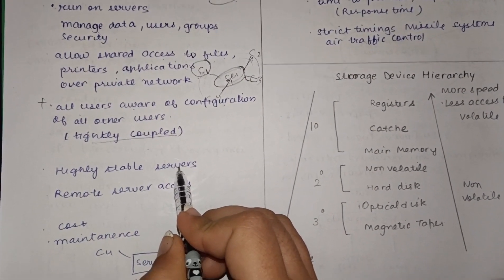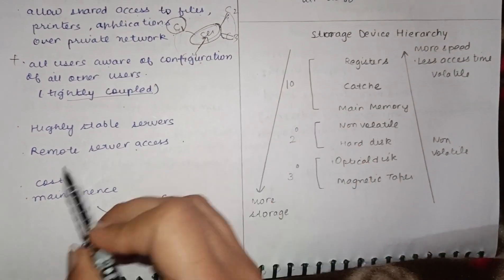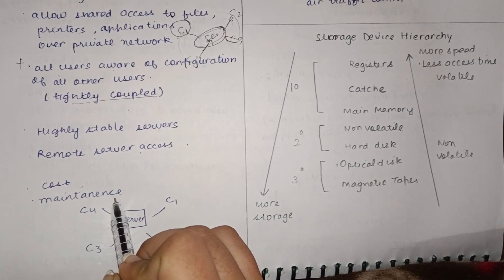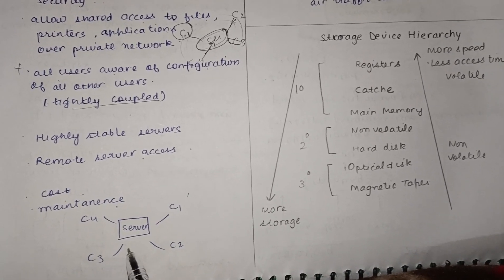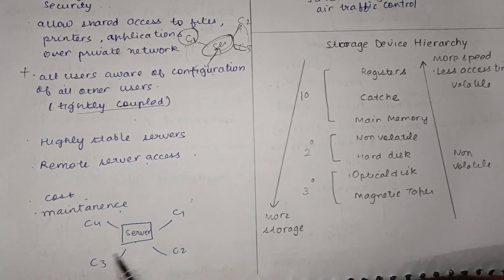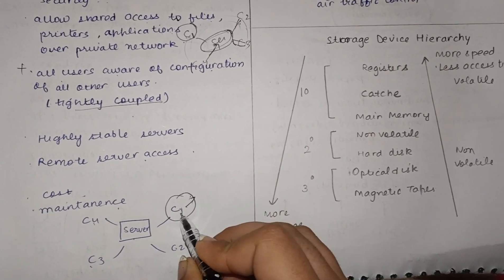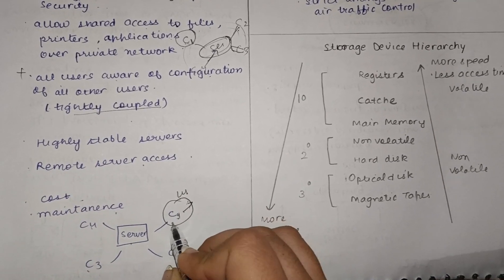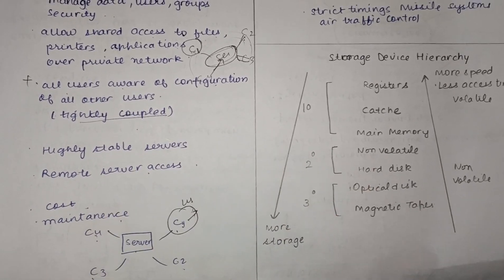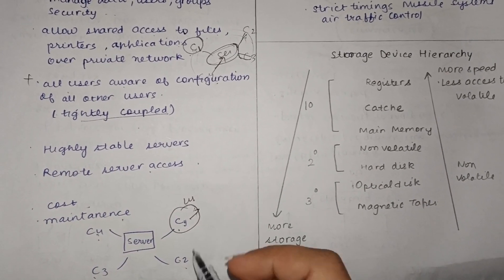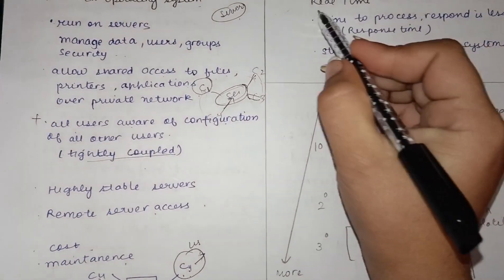The tightly coupled nature of network OS helps servers remain more stable and supports remote server access. The disadvantage is that it is very costly and requires regular maintenance and updating. In the diagram, the server is at the center and all computers such as C1, C2, C3, C4 are connected to it. Each user can access their own configuration as well as the configuration of other users on this private network.